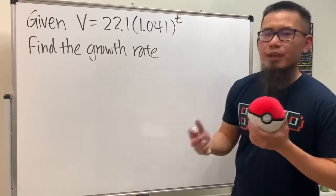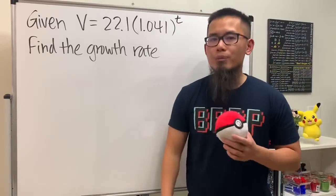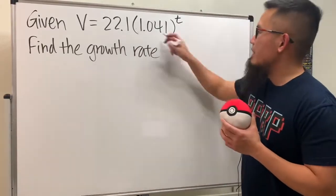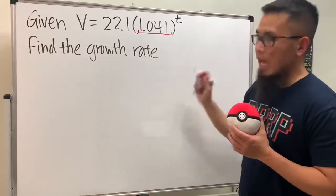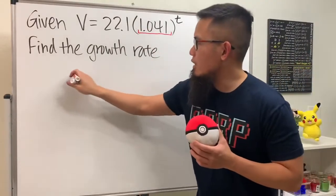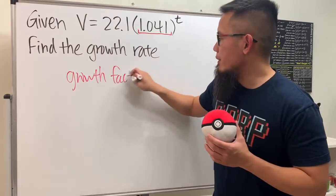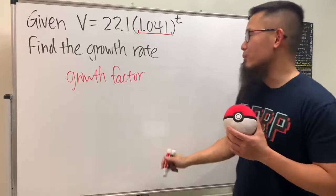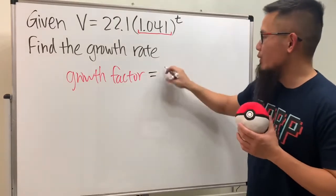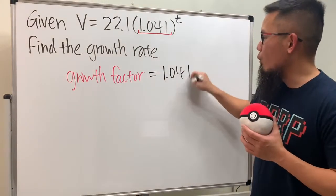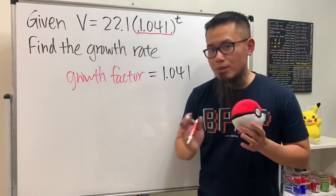for the exponent, so we are pretty much good to go. What I mean by that is the base right here will tell us the growth factor. Keep this in mind - this right here is actually the growth factor. So we know this is equal to 1.041, and now we just have to remember